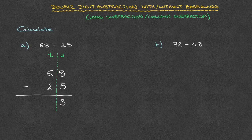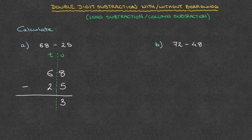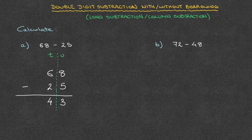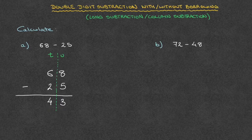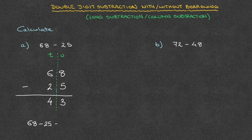Now that that's done, we take care of the tens. We have 6 minus 2, and 6 minus 2 is 4, which we write at the bottom of the tens column. And we're done. 68 minus 25 is equal to 43. We can write our final answer as 68 minus 25 equals 43.